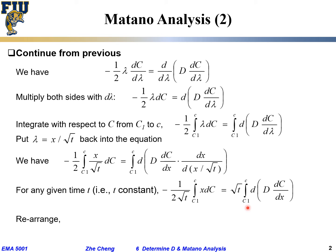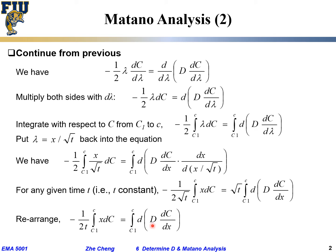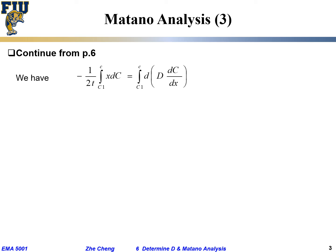We rearrange: square root of t is on the right side and on the left side in the denominator, so we combine them — square root of t comes down. The left side becomes minus 1 over 2t times the integration of x dc from c1 to c. The right side is the integration of d(D times dc/dx). This is our simplified form.